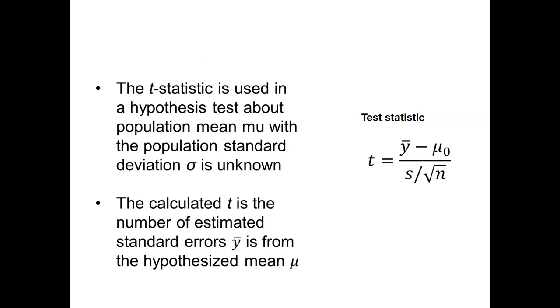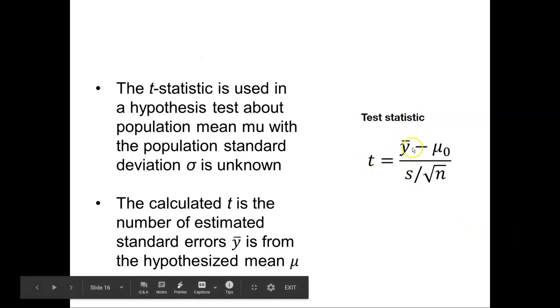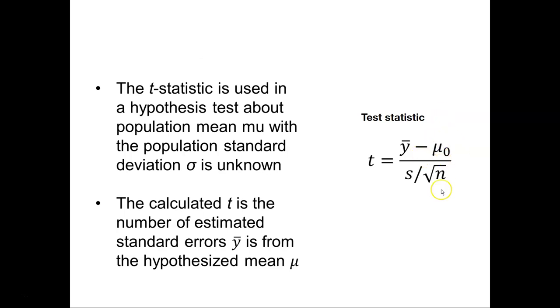The t-statistic is used in a hypothesis test about a population mean mu with the population standard deviation unknown. The t-statistic can be found by taking the mean of the sample y-bar minus mu sub-zero, some value we're interested in, and dividing that by the standard error, or the standard deviation divided by the square root of n. The calculated value for t is the number of estimated standard errors y-bar is from the hypothesized mean mu.